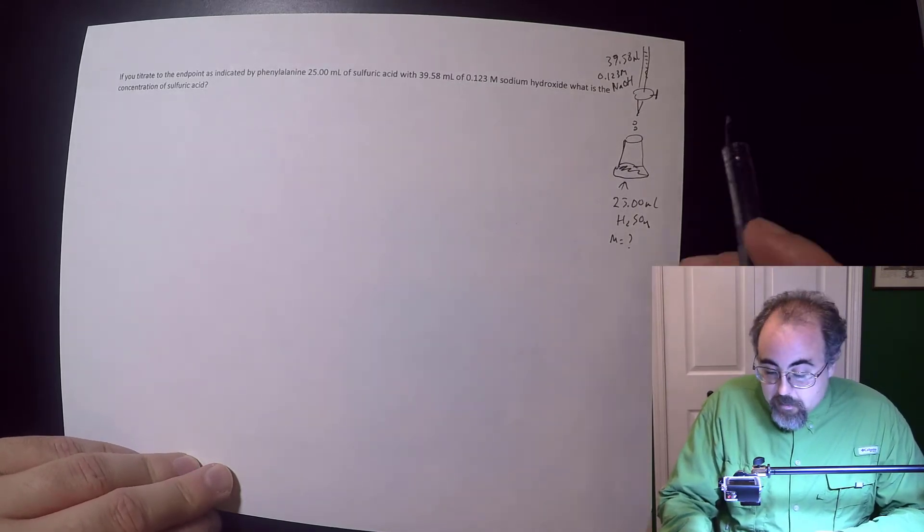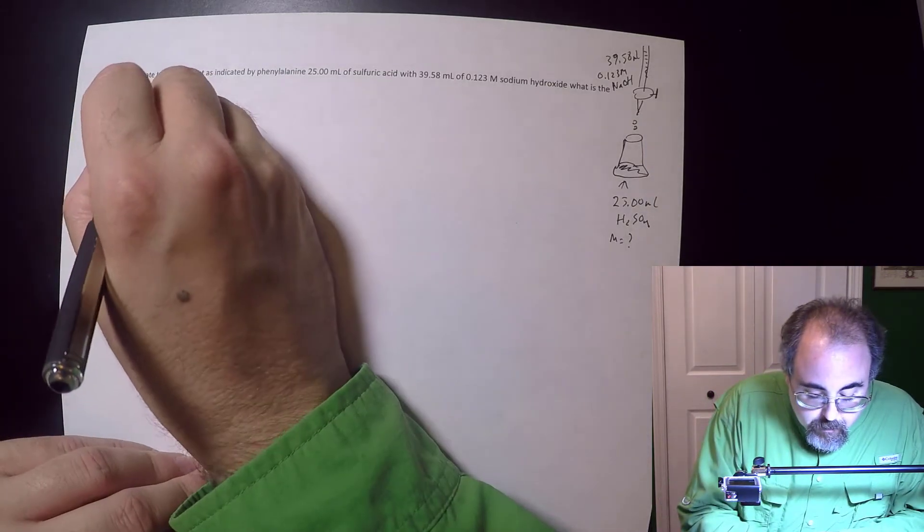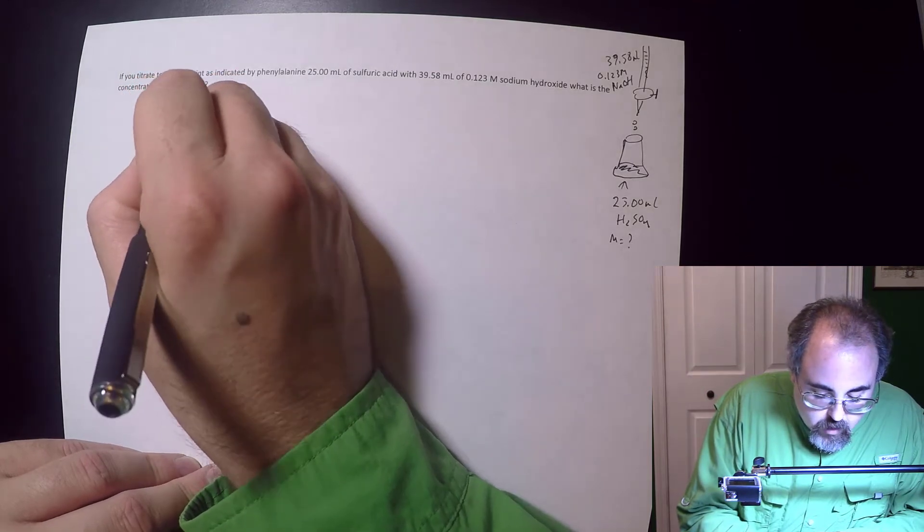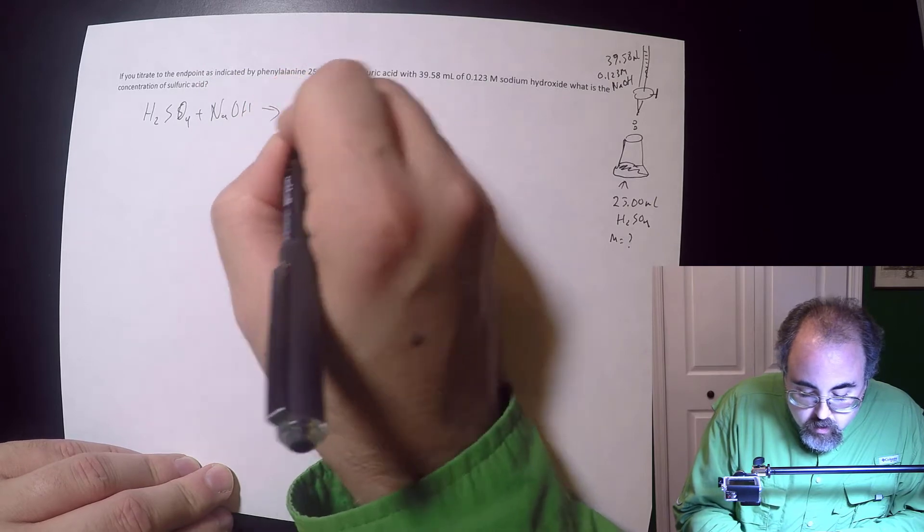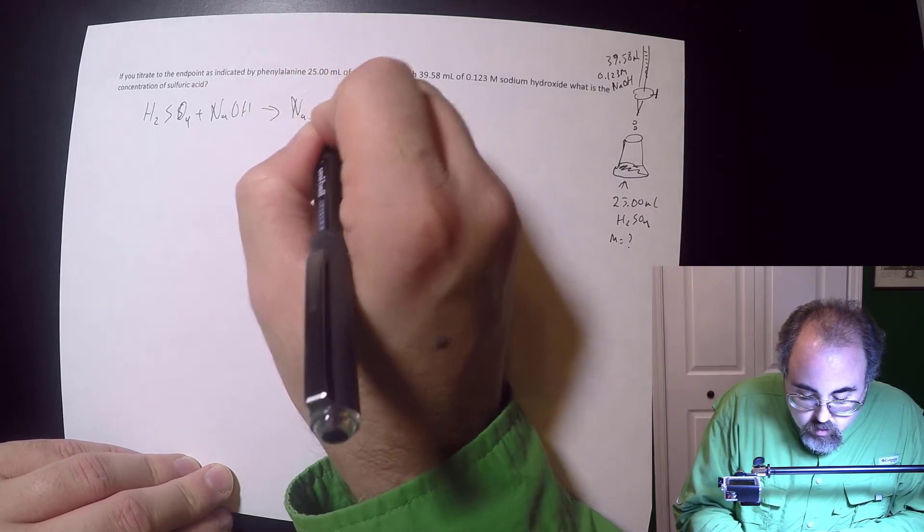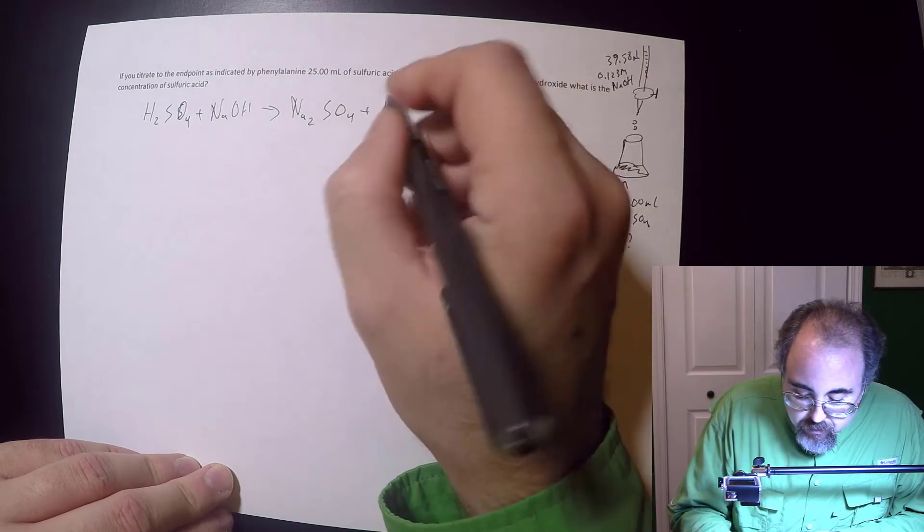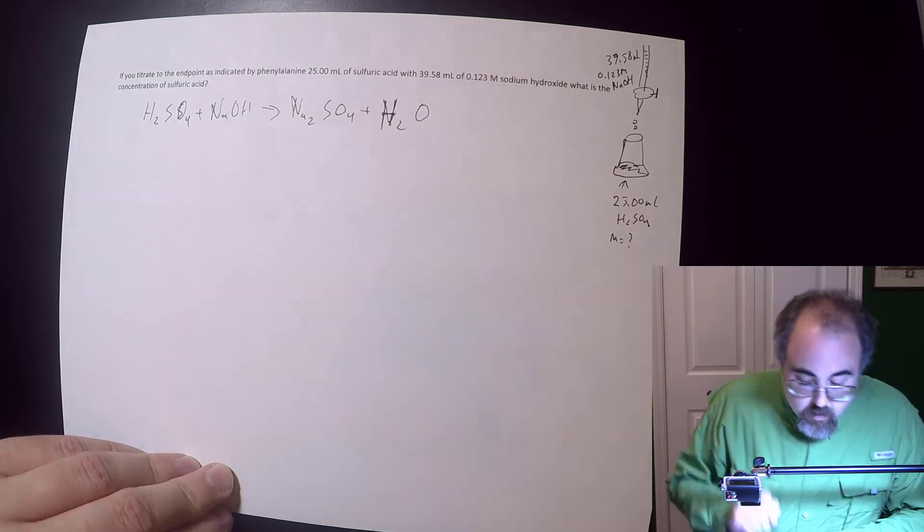What we want to do is we want to set up, and we've got to get to moles, and we're going to need a chemical equation. So let's do a chemical equation. It's going to be a neutralization reaction: H2SO4 plus NaOH yields Na2SO4. That's my salt. And then water, because we've got Arrhenius acids and bases.